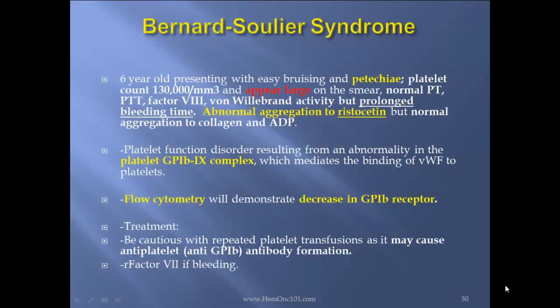Bernard-Soulier syndrome case report: 6-year-old male presenting with easy bruising. Platelet count of 130,000 and platelets appearing large on smear — this is the keyword: if you see large platelets, think Bernard-Soulier. Normal PT/PTT, factor VIII, von Willebrand activity, and prolonged bleeding time. Abnormal aggregation to ristocetin, abnormal aggregation to collagen and ADP. This is a platelet function disorder resulting from an abnormality in the platelet GP1B/IX complex, which mediates binding of von Willebrand factor to platelets. Flow cytometry demonstrates decreased GP1B receptor. Treatment: be cautious with repeated platelet transfusions as it may cause anti-platelet antibody formation; use recombinant factor VIIa if patient is bleeding.